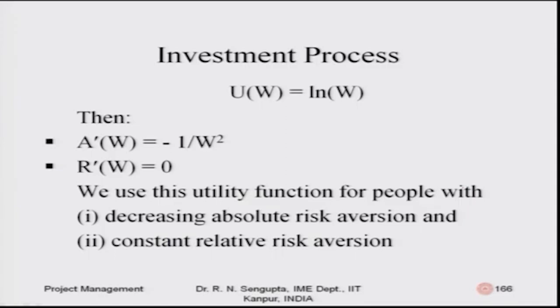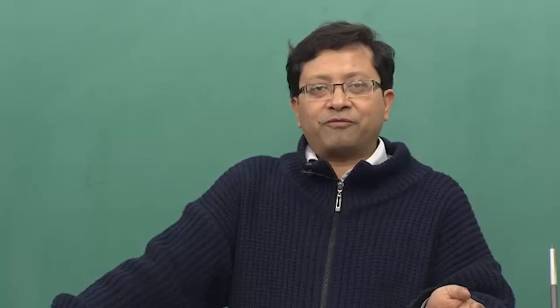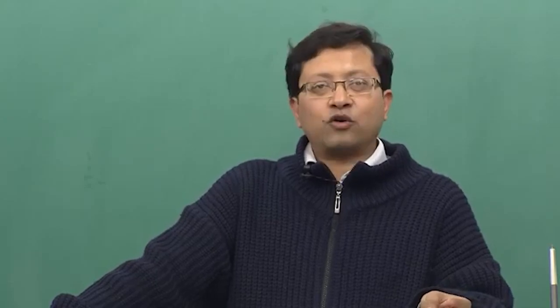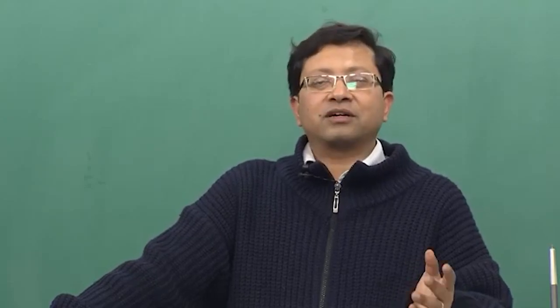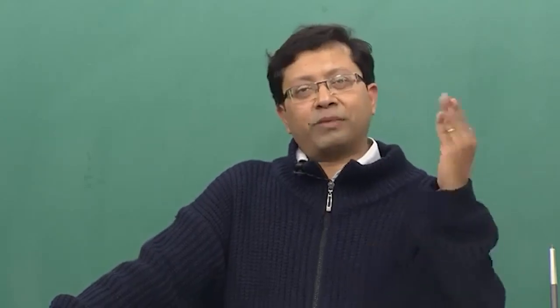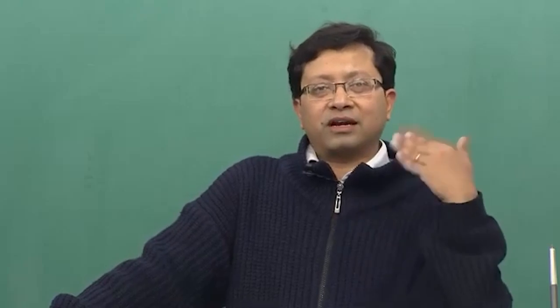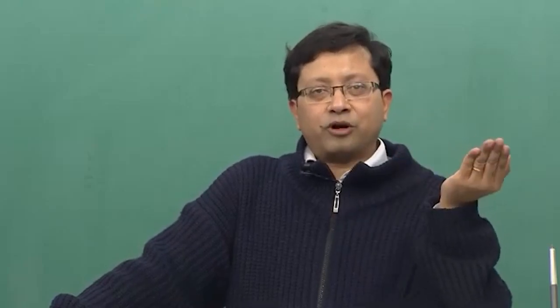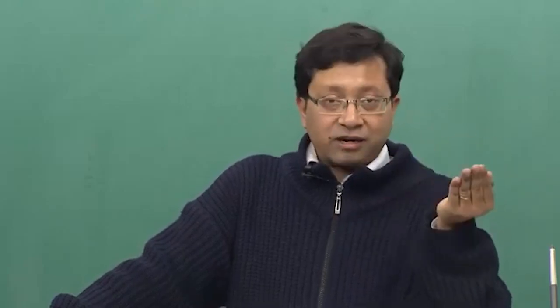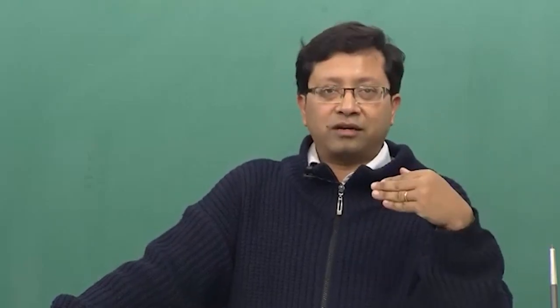If I again differentiate and use the characteristics of r and r prime, the r prime value comes out to be zero, which means it has a constant relative risk aversion property. You can go back to the slides and refer to what that means from the point of view of taking risk, not taking risk, or being indifferent to risk.